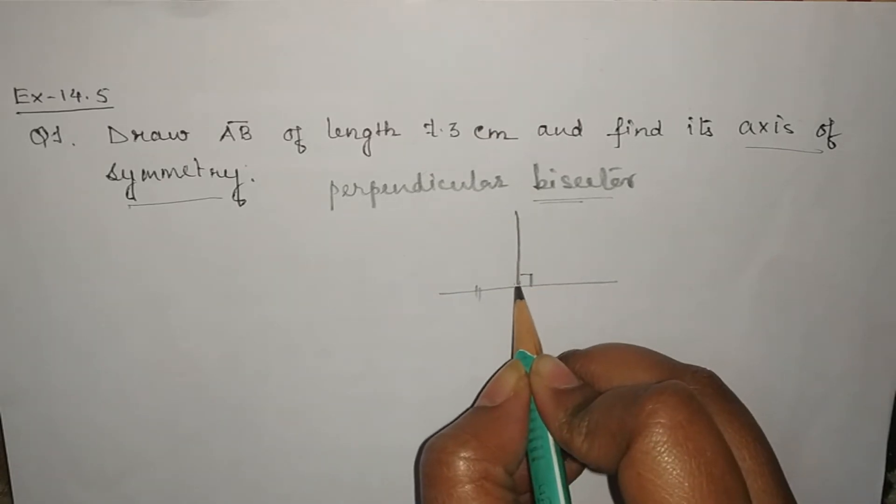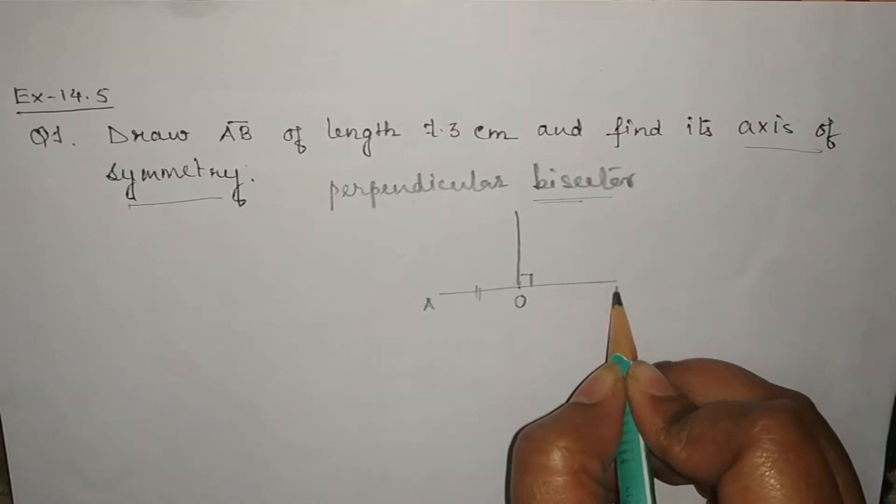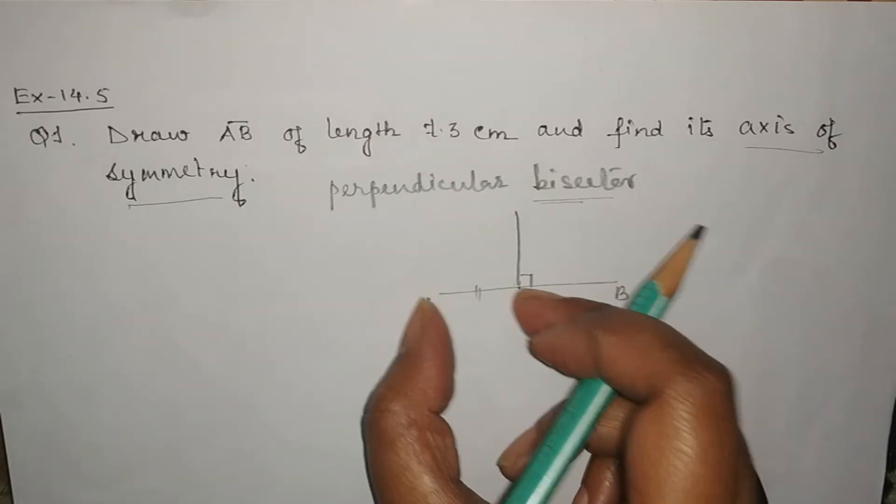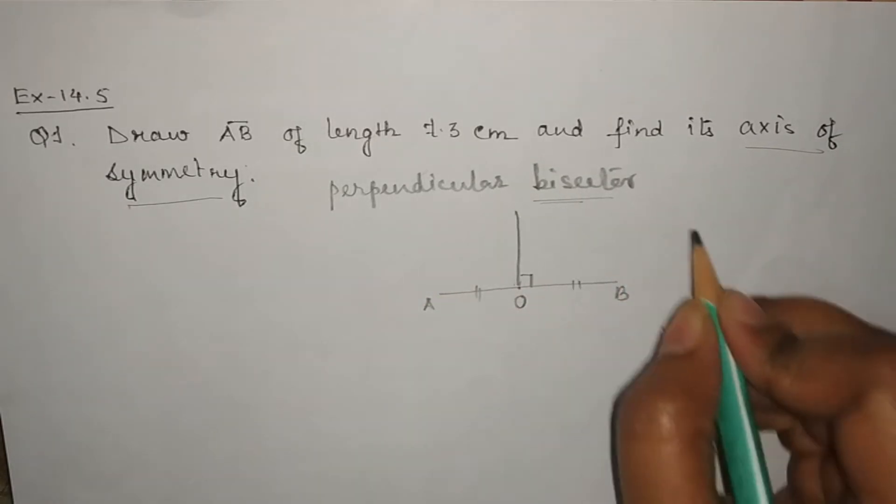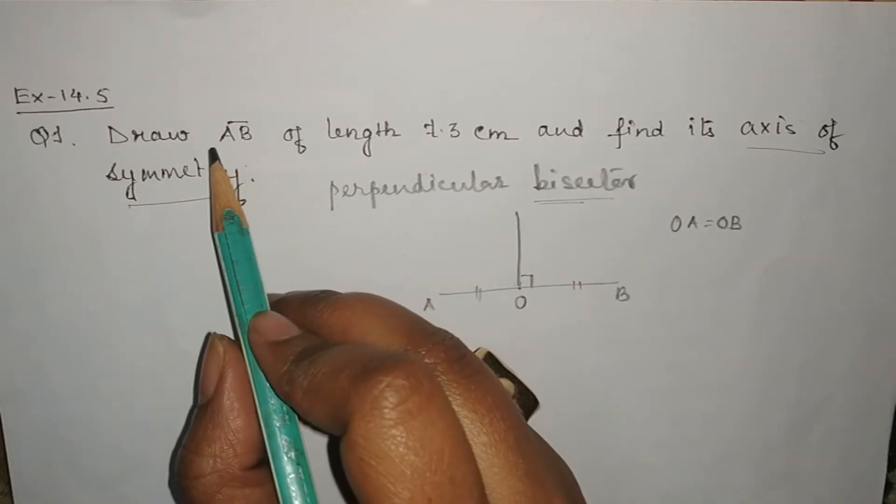That means if the point of intersection is say O and the line is say AB, this line divides the baseline into 2 equal halves. That means the length of OA is equals to the length of OB.